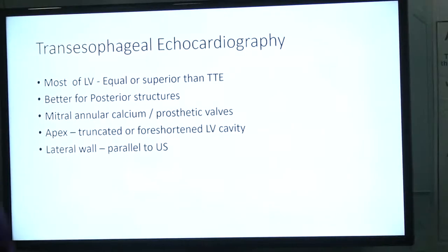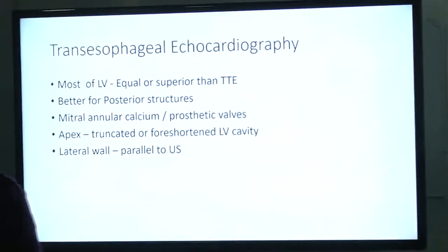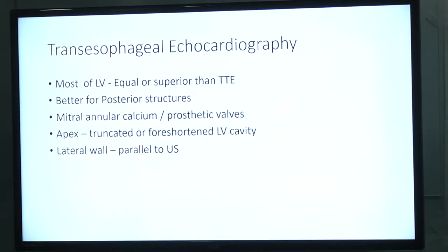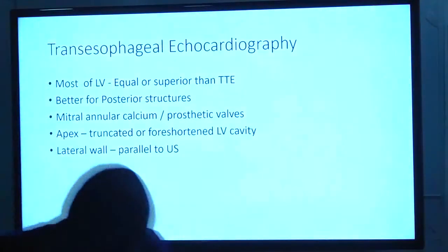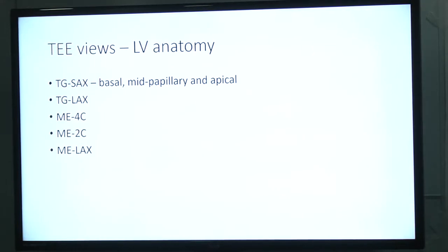When we talk about TEE for LV assessment, mostly it's equal or superior to the transthoracic approach. Sometimes it's better for posterior structures, but some pitfalls may occur when we have acoustic shadow or when the apex is too deep in the far field. Our major concern in getting good LV images is that they are not foreshortened or truncated. To avoid that, we can increase our depth and focus on the middle of LV. We also have troubles with the lateral wall because it's parallel to the ultrasound beam. The most used views are transgastric short axis at different levels, the transgastric long axis, and the mid-esophageal four-chamber and long axis views.